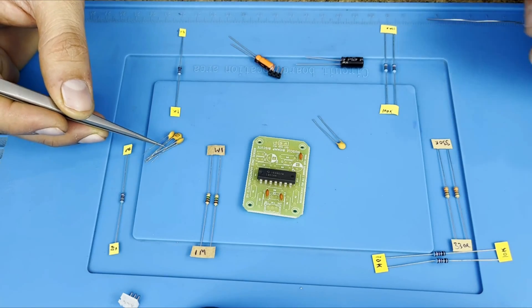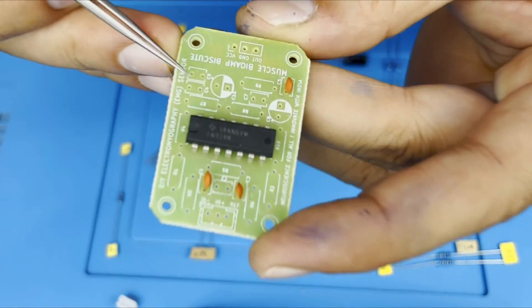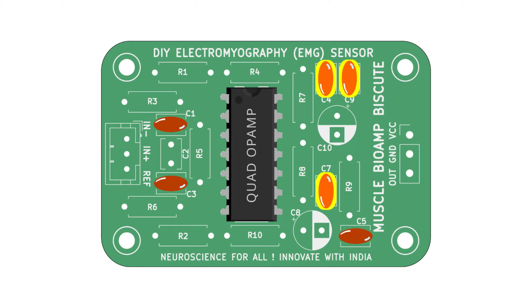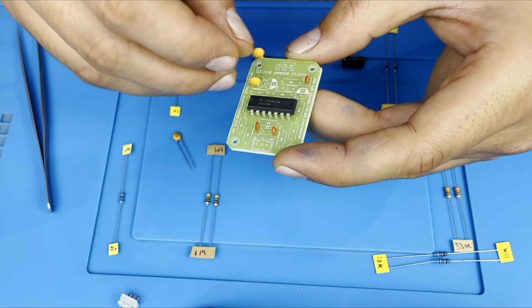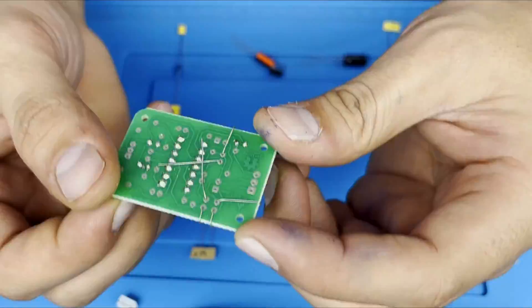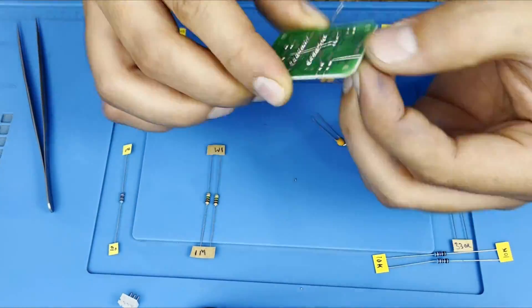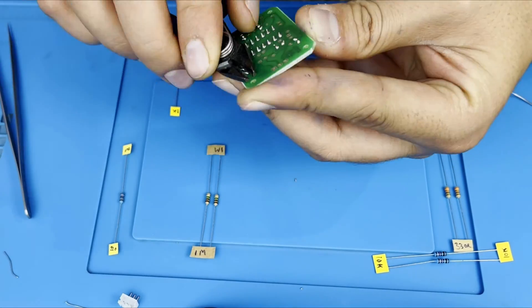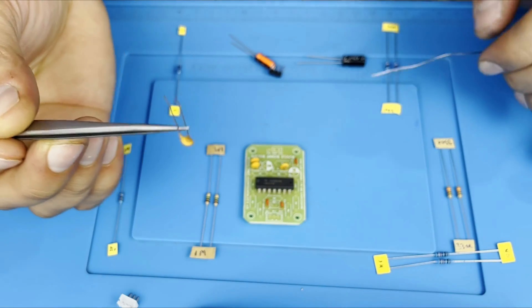This is the 100NF, we will insert it in the C4, C7, C9 location. In the diagram we can see. We will do the same thing as we did to the other capacitors.